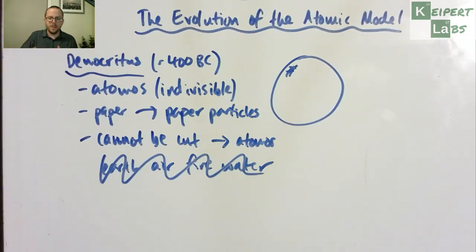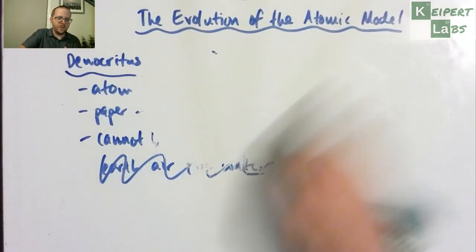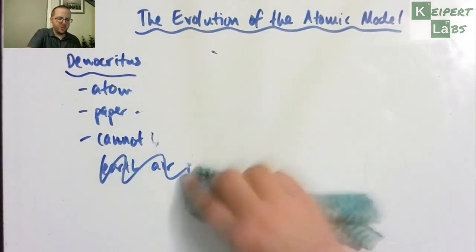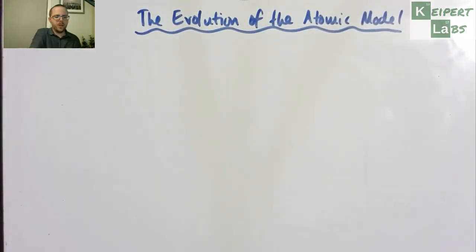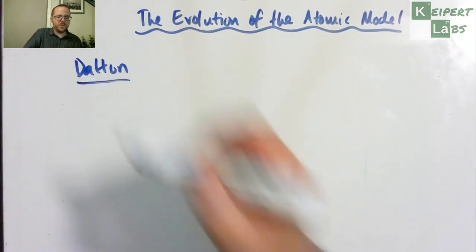Eventually it started to work its way back around, but unfortunately it took far too long. They stuck with old ideas for much longer than they should have, but that was the ancient Greeks for you. And so then we get to a man named Dalton.